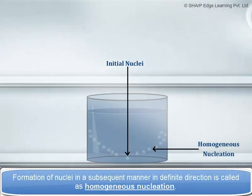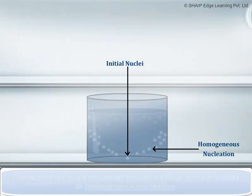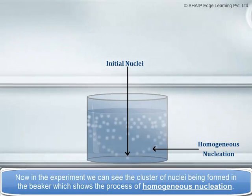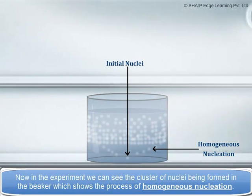Formation of nuclei in a subsequent manner in a definite direction is called homogeneous nucleation. Now in the experiment, we can see the cluster of nuclei being formed in the beaker which shows the process of homogeneous nucleation.